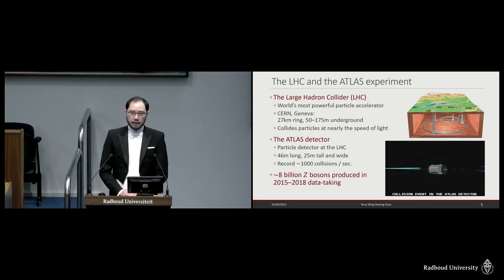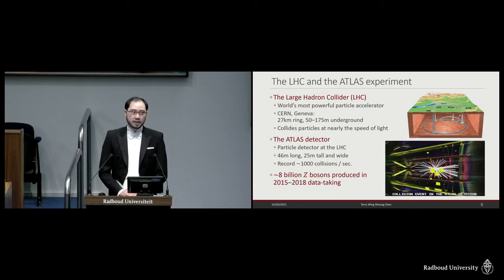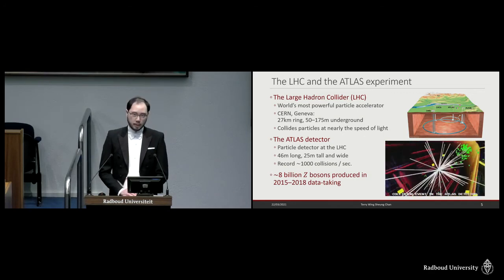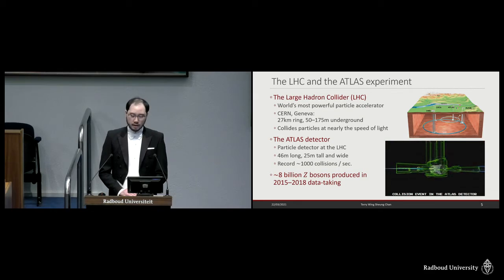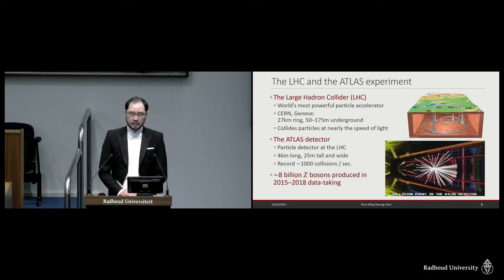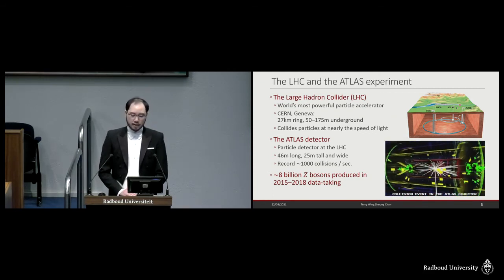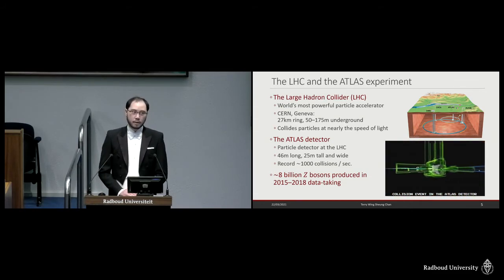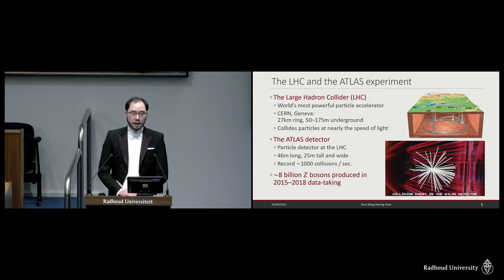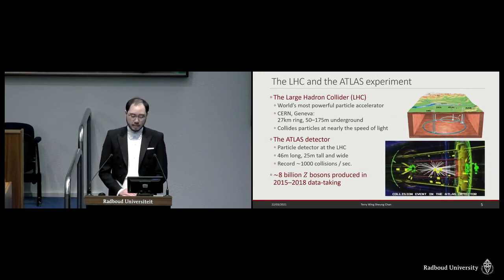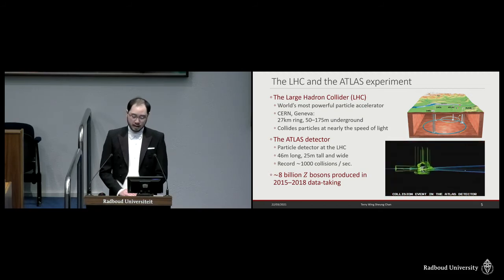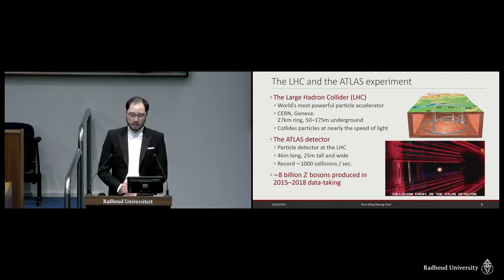And to search for these decays, we make use of data from the Large Hadron Collider and the ATLAS experiment. The Large Hadron Collider, or LHC, is the world's most powerful particle accelerator, which is located at CERN in Geneva. It is a 27-kilometer ring buried deep underground, and it is used to collide particles at nearly the speed of light. The ATLAS detector is a particle detector at the LHC. It is 46 meters long and 25 meters tall and wide, and this enormous detector is able to record up to 1,000 collisions per second. It is estimated that roughly 8 billion Z bosons were produced in the data-taking period from 2015 to 2018, and this is the data that makes my thesis possible.